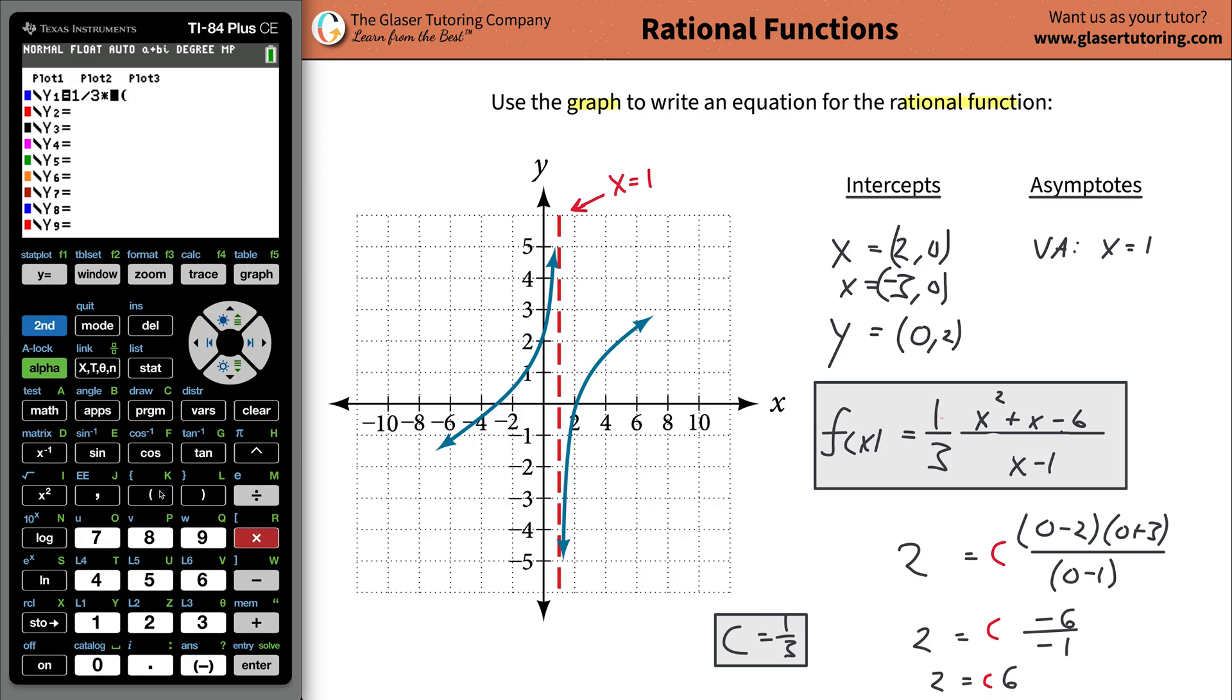Times, do I need a double parentheses? No, I really don't. So I'll do one parentheses. So there's going to be X squared plus X minus six, close the parentheses, then divide it by. Now you do need the parentheses here.